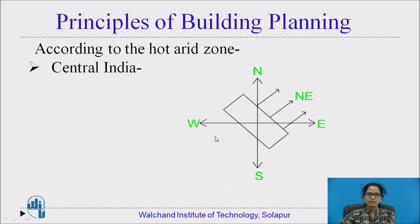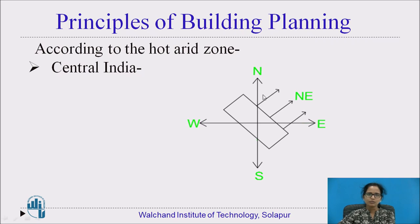In central India, the orientation should be along the south-east or the north-west direction, and it should be facing towards the north-east direction. The facing towards the north-east direction will affect the orientation of the building. These are the points which should be considered when the orientation is towards the south-east and the north-west direction.